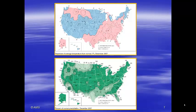The top graph shows departures of average temperatures from the normal in degrees Fahrenheit — blue shows the negative anomalies and pink or red shows the positive anomalies. The bottom graph shows anomalies in percent of normal precipitation: anything at 100% or above is in a darker green, and anything below 100% is in a lighter green. You can see that the temperature anomalies seem a little more organized than the precipitation anomalies.